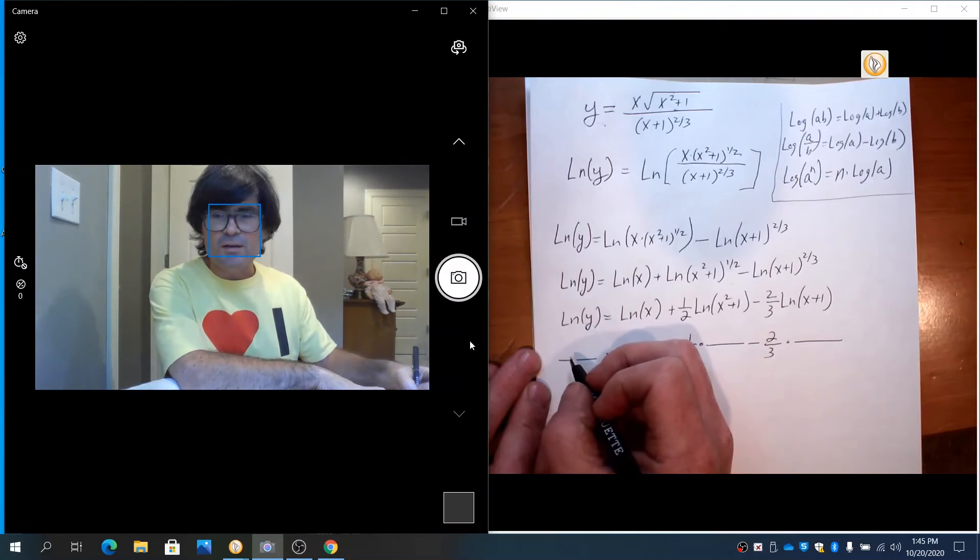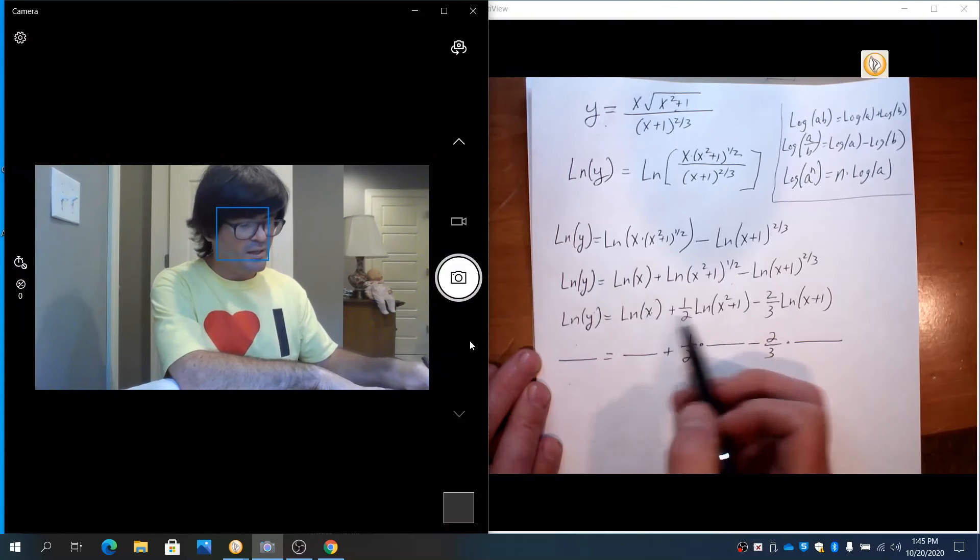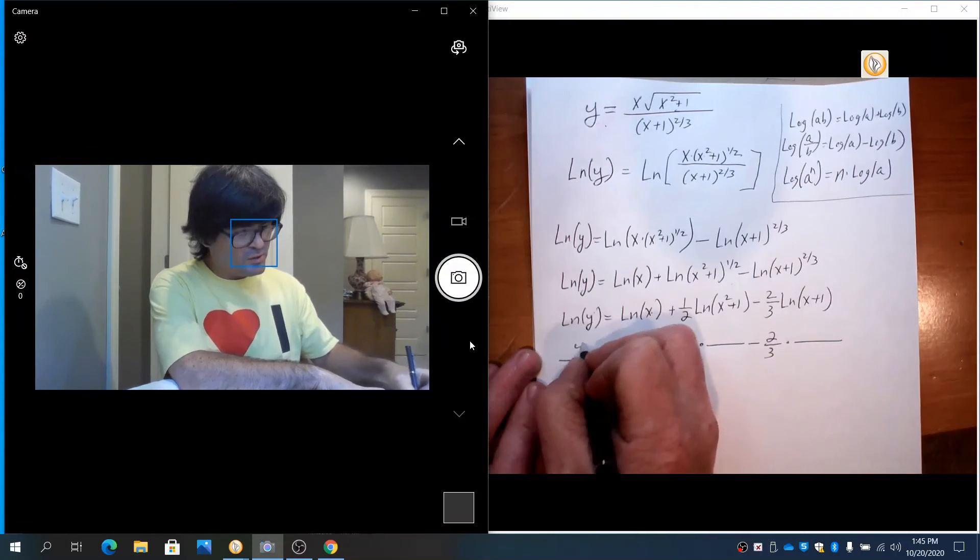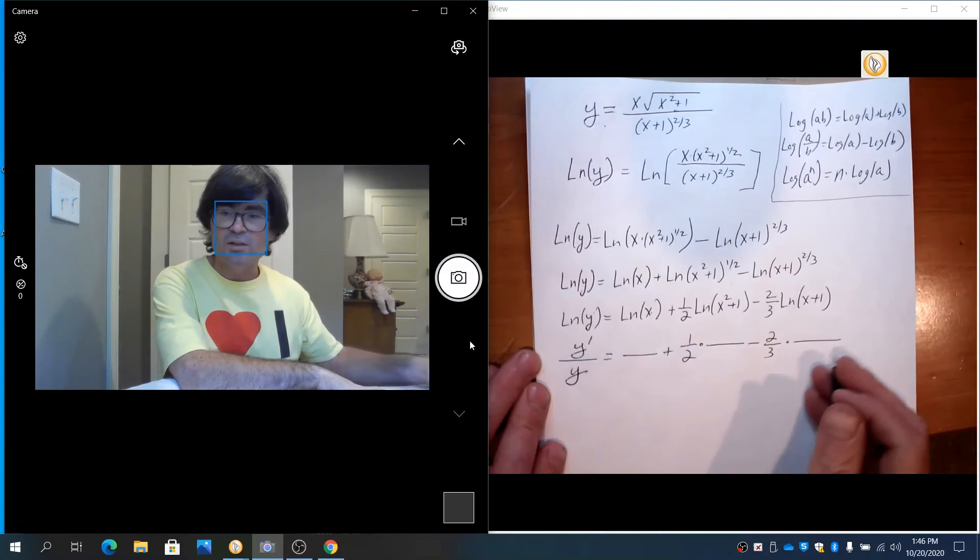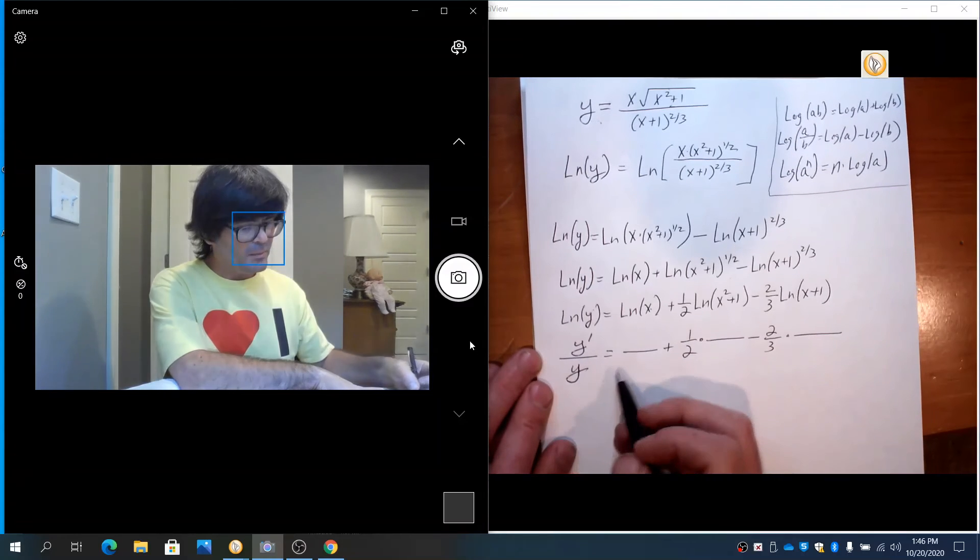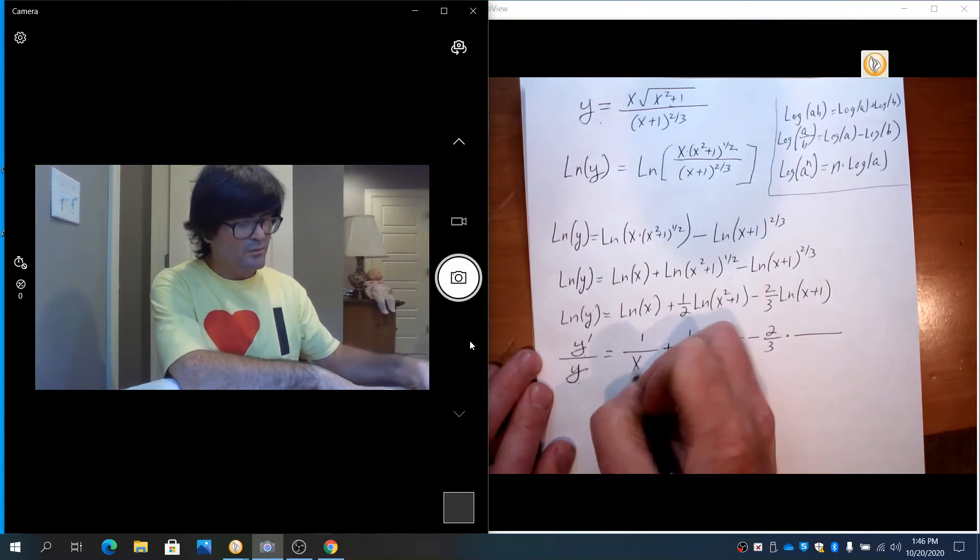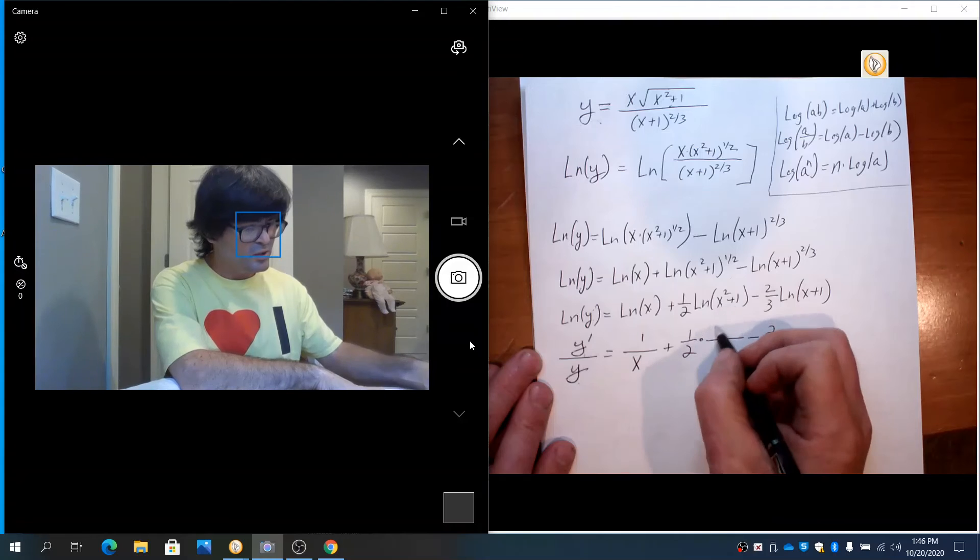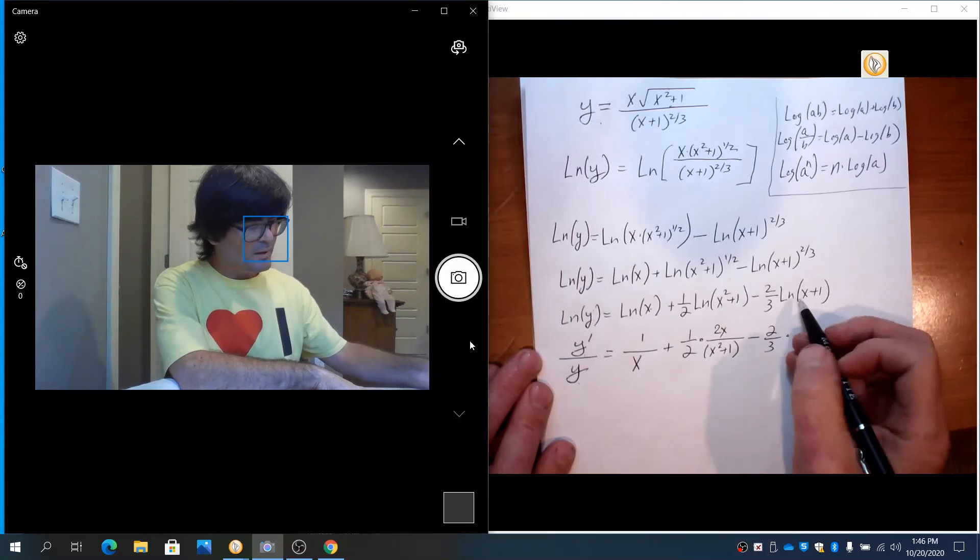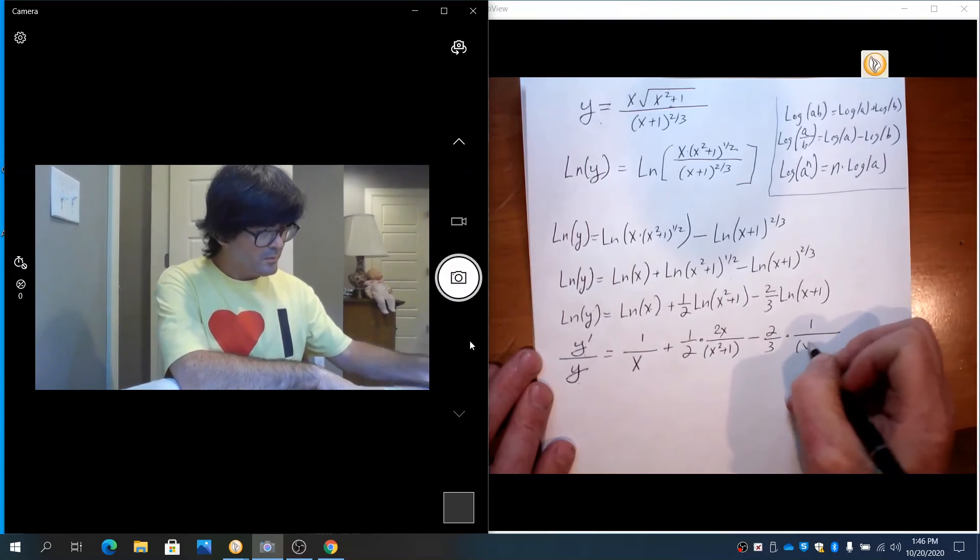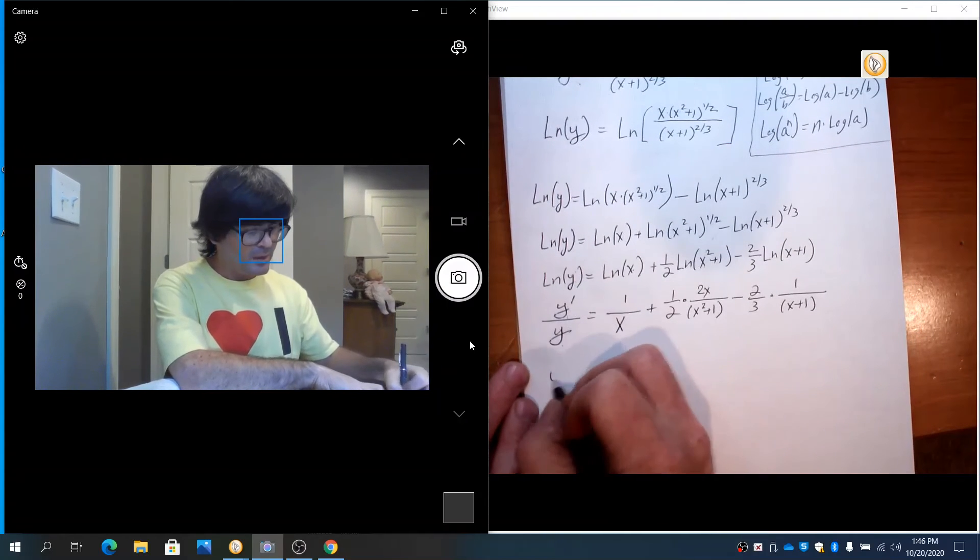So that kind of shows you the format. The derivative of natural log of y, I'm just going to go ahead and use the y prime notation here. y prime over y here. The derivative of natural log of x, 1 over x. The derivative of x squared plus 1 is 2x, and you have x squared plus 1 down below. Here the derivative of x plus 1 is 1 over x plus 1.